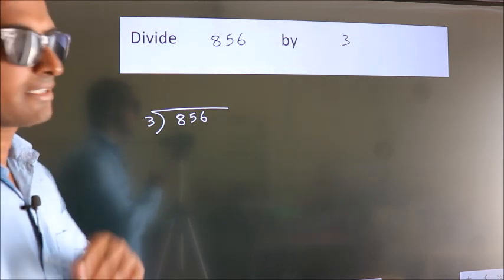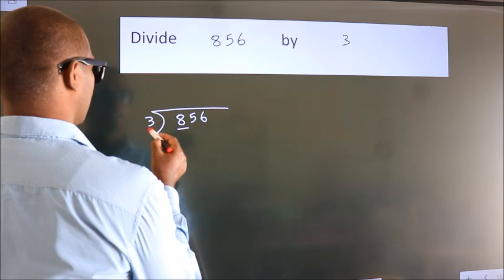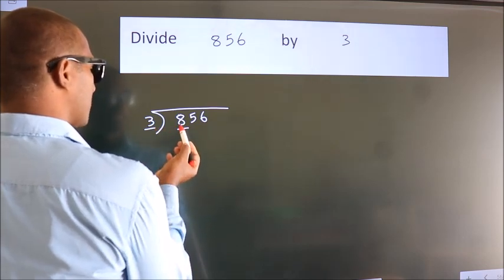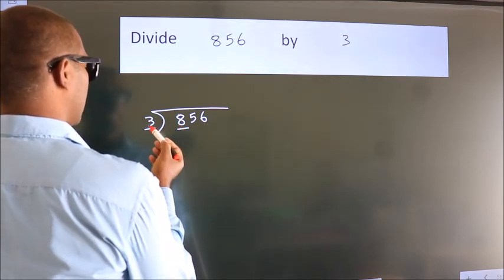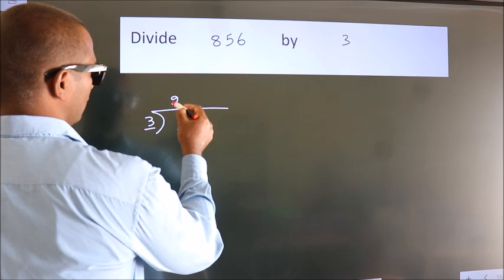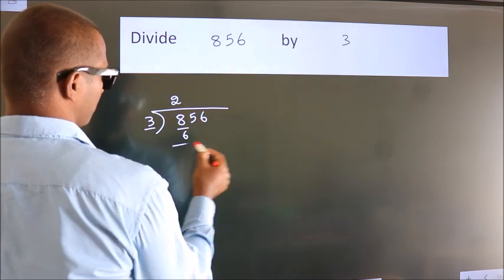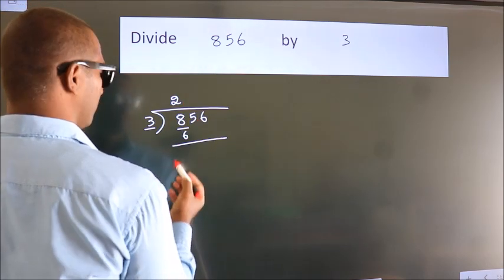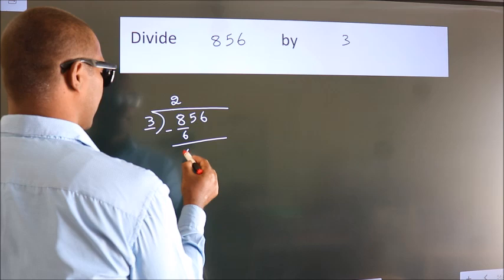Next. Here we have 8, here 3. A number close to 8 in 3 table is 3 2's 6. Now we should subtract. We get 2.